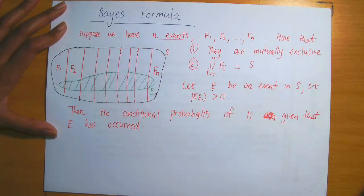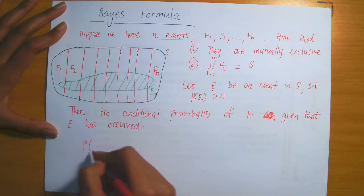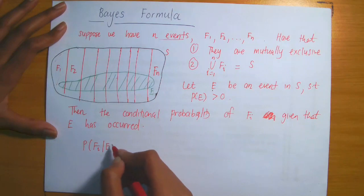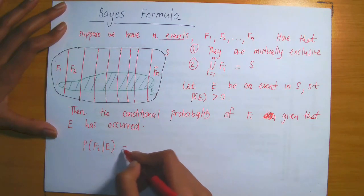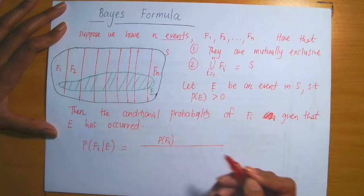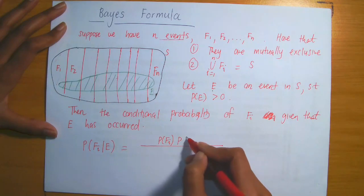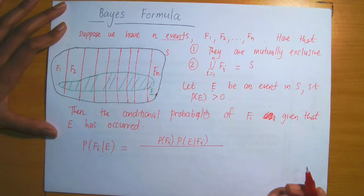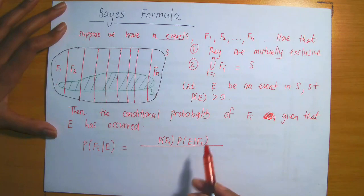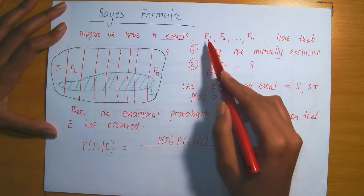Bayes' Law, Bayes' Formula, or Bayes' Theorem gives you a formula to calculate this. It states that the probability of one of the N events, denoted Fi, given that event E has occurred, is equal to the probability of event Fi multiplied by the conditional probability of E given Fi, divided by a similar sum of products running through each of the N events.